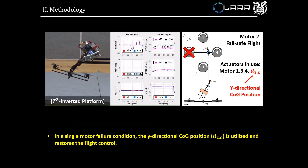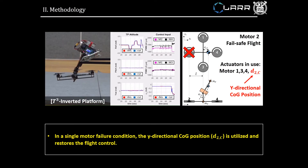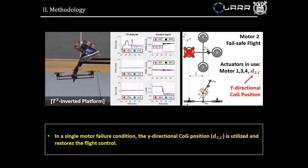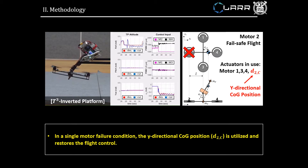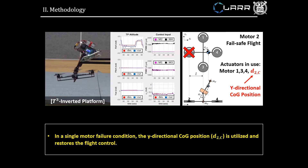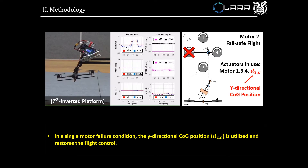However, in a single motor failure condition — specifically a motor 2 failure condition in this video — the Y-directional COG position, or D2C, is utilized in replacement of the faulty motor 2 and restores the flight control.